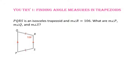Pause the video and do U-try number 1. Notice that the trapezoid has been rotated. Quadrilateral PQRS is an isosceles trapezoid, and the measure of angle R is 106. What are the measures of angle P, angle Q, and angle S?